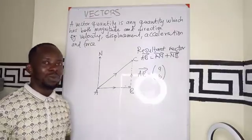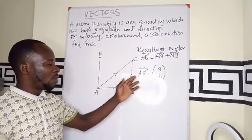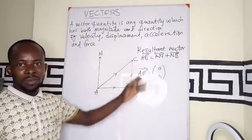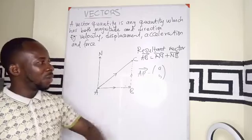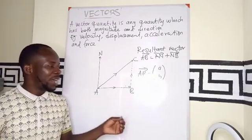Now in the last video we talked about component vectors. So a component vector is represented in this form where the A is measured along the X axis and the B is measured along the Y axis.